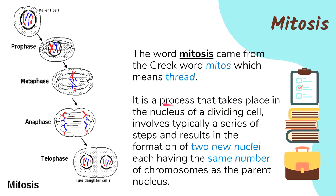I want to establish early on that both mitosis and meiosis are actually division of the nucleus. The division of the entire cell is actually called cytokinesis. So mitosis is the division of the nucleus of the dividing cell and involves a series of steps.